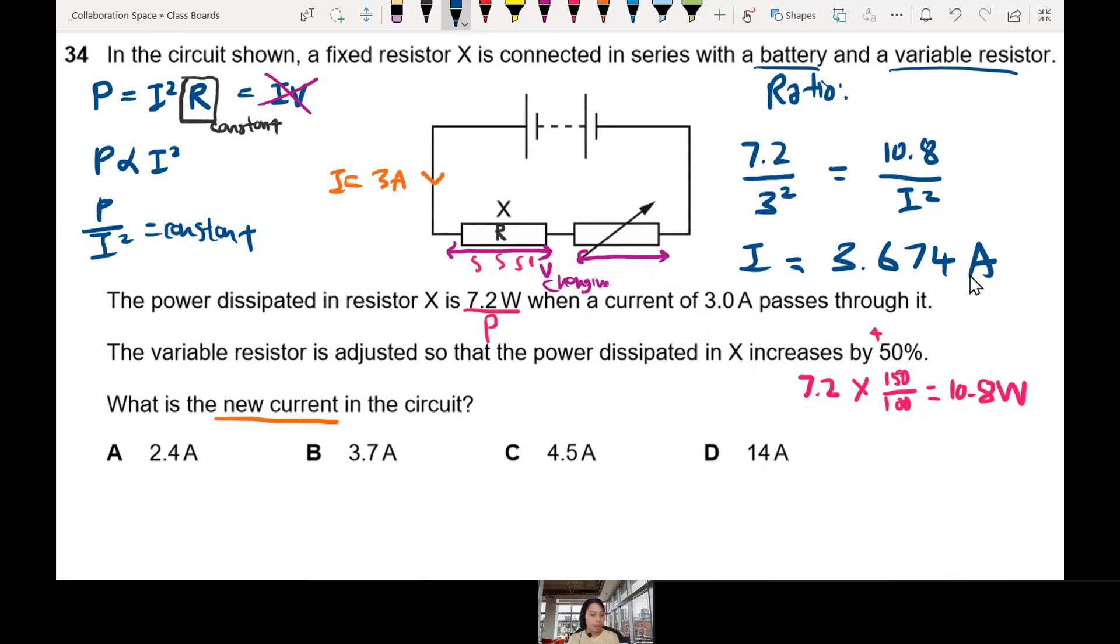If you forgot to square root, you might choose 14, choice D. The best choice here is going to be 3.7, so that's B.